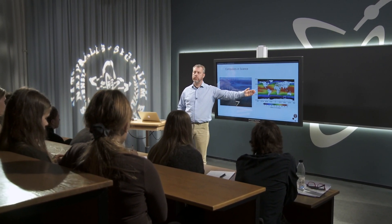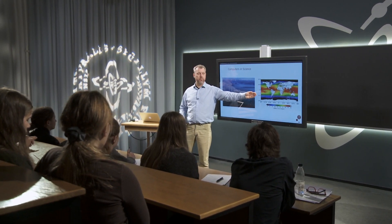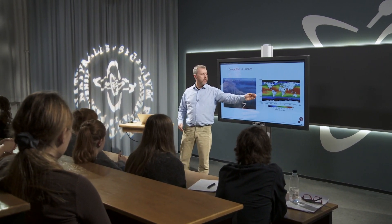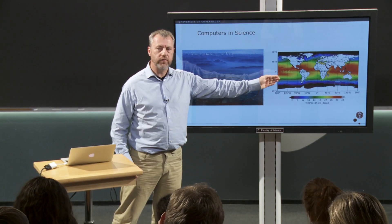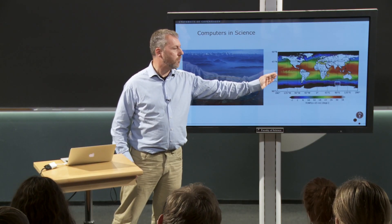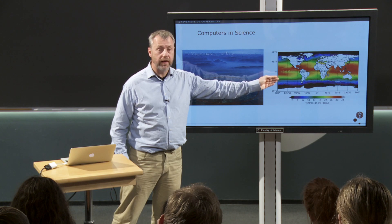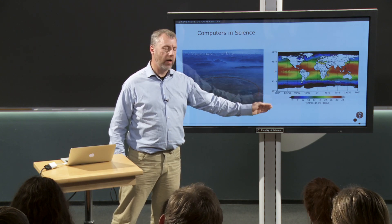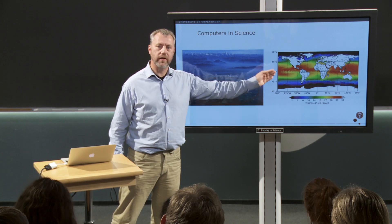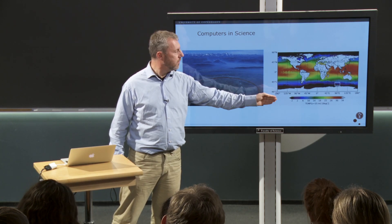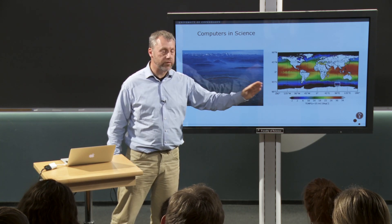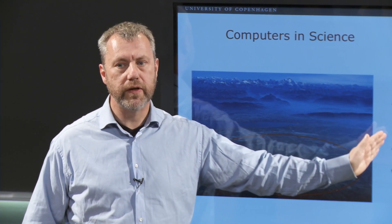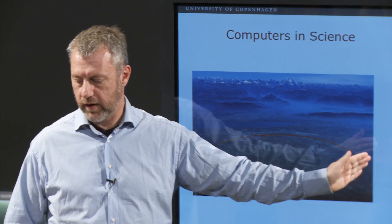We have to simulate the weather everywhere in the world every six hours. There are 50 million points in this, and the temperature, humidity, pressure, and other things have to be calculated at each of these 50 million points four times every day. Then you have to run a few hundred years to get anything that's stable. This simulation is the result of 4,000 CPUs working for a few weeks to produce that result.